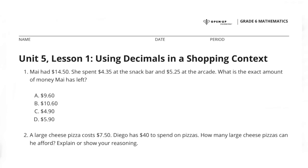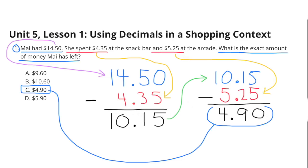Unit 5 Lesson 1, Using Decimals in a Shopping Context. Problem 1: Mai had $14.50. She spent $4.35 at the snack bar and $5.25 at the arcade. What is the exact amount of money Mai has left?